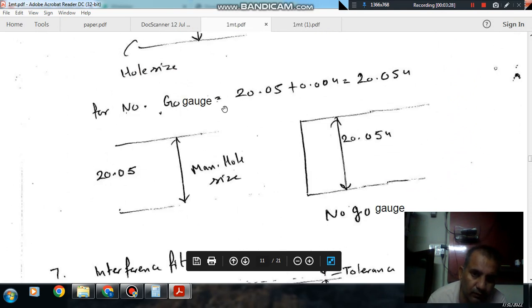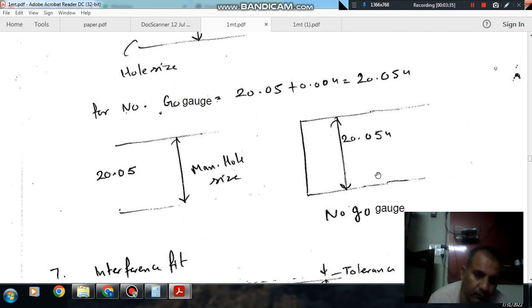So No-Go gauge size should be maximum size plus tolerance, which is 20.054. So this shaft should not pass through this hole. No-Go gauge. So this is the No-Go gauge.